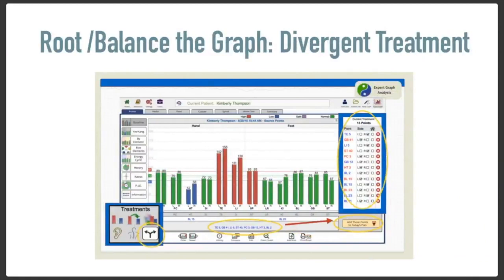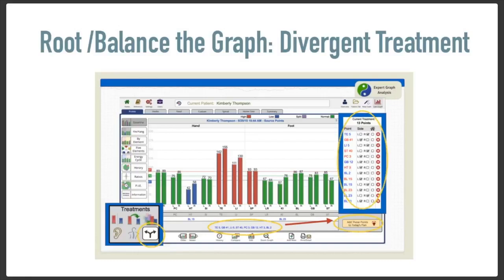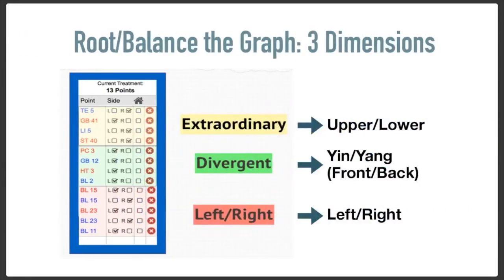Your basic root treatment for balancing the graph is the divergent treatment. Just as a reminder: click on the divergent channel treatment box, the points will come up, add those points to your treatment plan, and they're all there. The top points are the extraordinary points, the middle are divergent, and the bottom are left-right. You have choices: you could pick and choose. You could do the extraordinary and divergent on the front, and then turn the patient over and also do the left-right on the back. I don't typically add the back points to the extraordinary and divergent. If my patient needed to be facedown, I might only choose the left-right on the back. If face-up, I'd choose extraordinary and divergent.